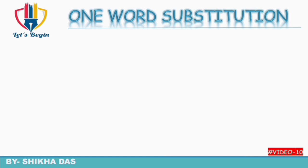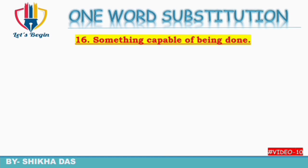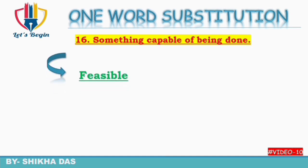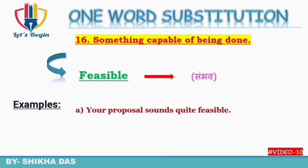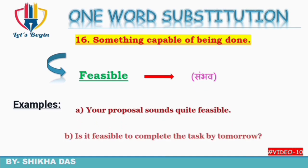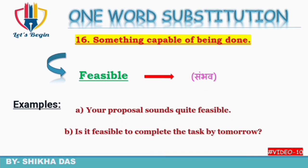Question number 16: something capable of being done — jo kiya ja sake, jo sambhav ho. Isko one word mein kehte hain 'feasible'. Examples: 'Your proposal sounds quite feasible.' 'Is it feasible to complete the task by tomorrow?' — Kya kal tak task complete karna feasible hai, sambhav hai? So feasible means something that can be done.